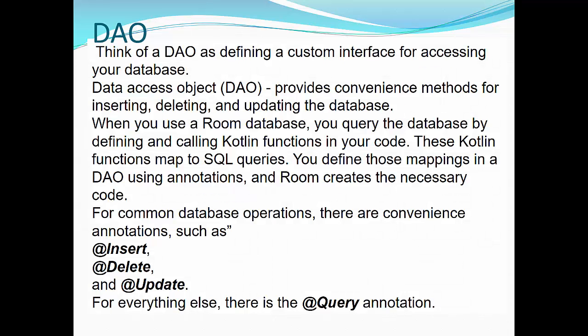DAO. Think of DAO as defining a custom interface for accessing your database. Data access object or DAO provides convenience methods for inserting, deleting, and updating the database. This is basically just CRUD operations. When you use Room database, you query the database by defining and calling Kotlin functions in your code. These Kotlin functions map to SQLite queries. You define those mappings in a DAO using annotations, and Room creates the necessary code. For common database operations, there are convenience annotations such as @Insert, @Delete, and @Update. For everything else, you have to use @Query annotation.